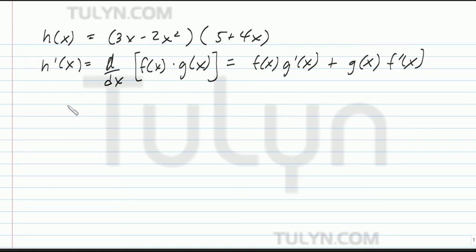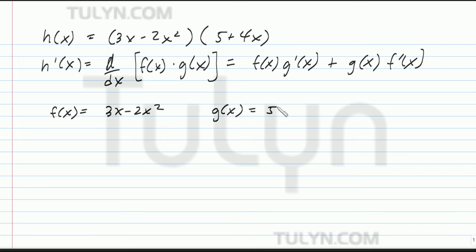So figure out which one is f of x. I'll let f of x equal the first function, 3x minus 2x squared. I'll let g of x equal the second function, which is 5 plus 4x.